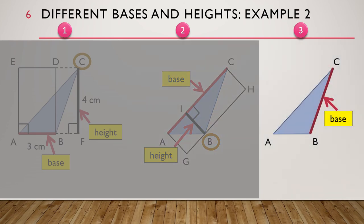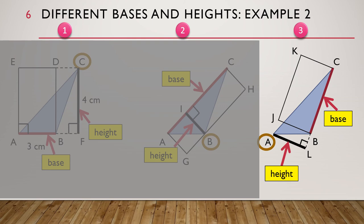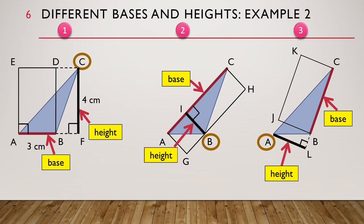Let's look at the third case. Here, BC is the base. We can draw the related rectangle from the base. The base BC is the common side shared by the triangle and the related rectangle. In this case, the height is JB — it is perpendicular to the base. We can move the height so that it starts from A, which is the vertex away from the base BC, and goes all the way down to the line that is extended from the base. So, AL is also the height of triangle ABC. We can see that when the base changes, the height changes as well, but we will get the same answer for the area of the triangle in each case, because it is the same triangle ABC.